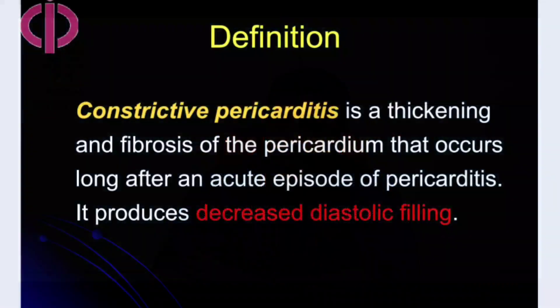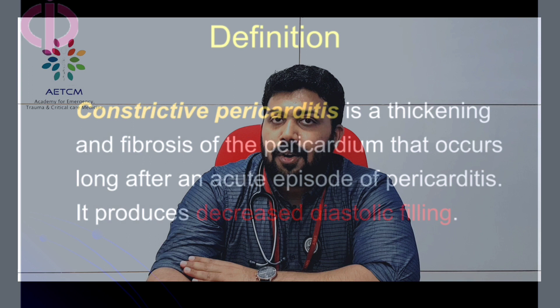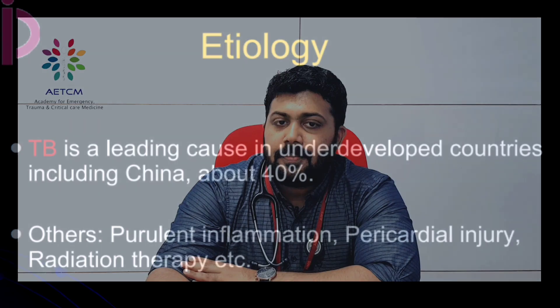Constrictive pericarditis is a thickening and fibrosis of the pericardium that occurs long after an acute episode of pericarditis, producing decreased diastolic filling. It is a form of obstructive shock. Tuberculosis is the leading cause in underdeveloped countries, attributable to about 40 percent of cases. Other causes include purulent inflammation, pericardial injury, and radiation therapy.